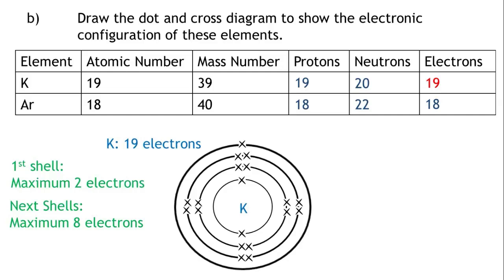Argon has 18 electrons. 2 in the first shell, 8 in the second shell, and 8 in the third shell.